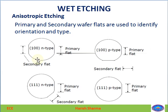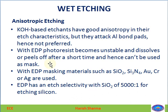As studied in previous lectures, the flats on the wafer identify whether it is n-type or p-type, and whether it is a (110) or (111) plane. Among anisotropic etchants, KOH is mostly used as it has the highest etch rate, but the problem is that it also attacks aluminum bond pads, so it is not preferred. Instead, EDP — the next option in the table — is used.